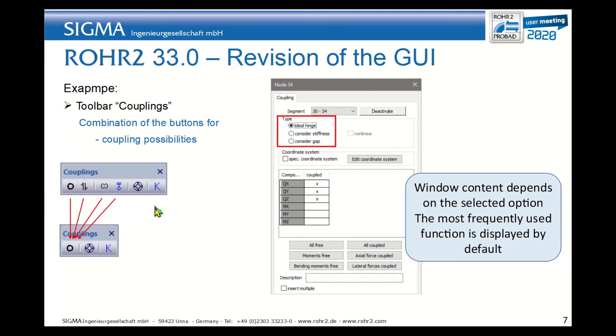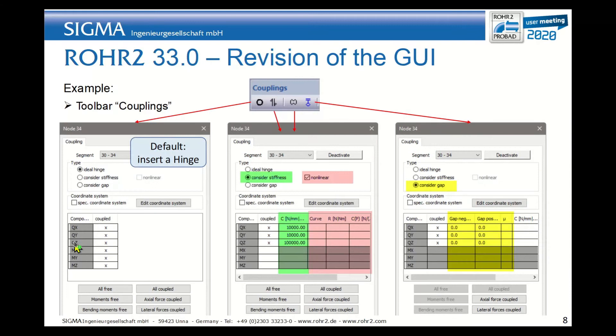So now a similar consolidation has been done on the couplings. Previously there were the normal hinge, the internal friction hinge, the internal spring, and the internal friction support. And they are all now regrouped under the same symbol of couplings, and it depends on what features you want to activate.